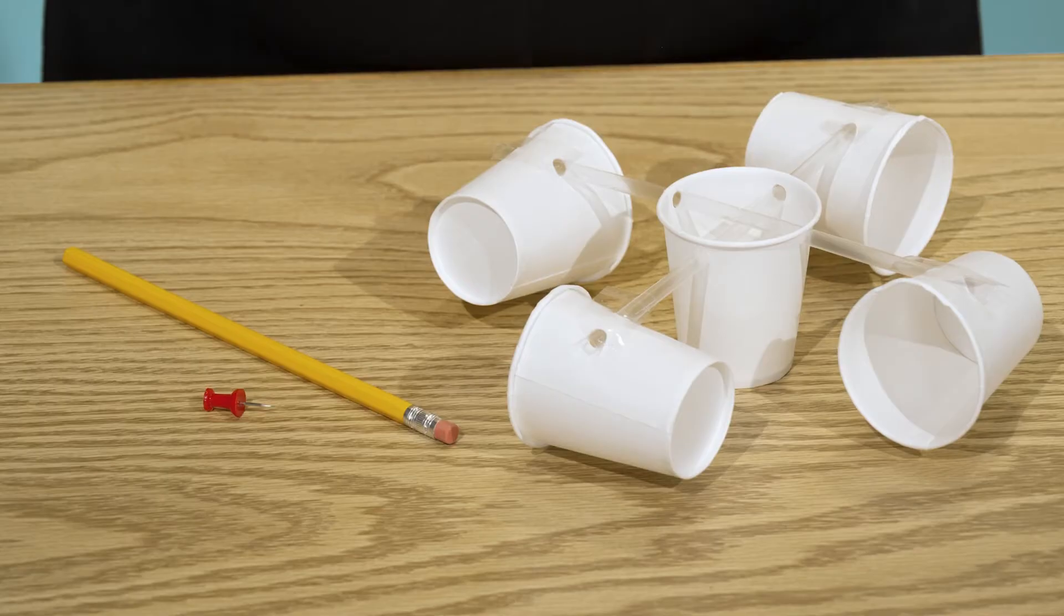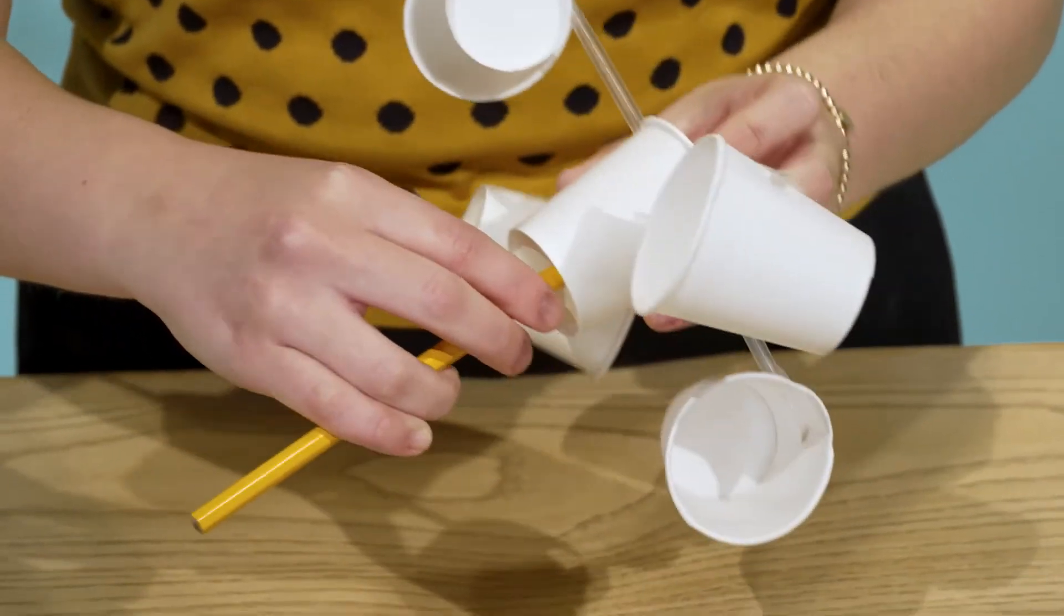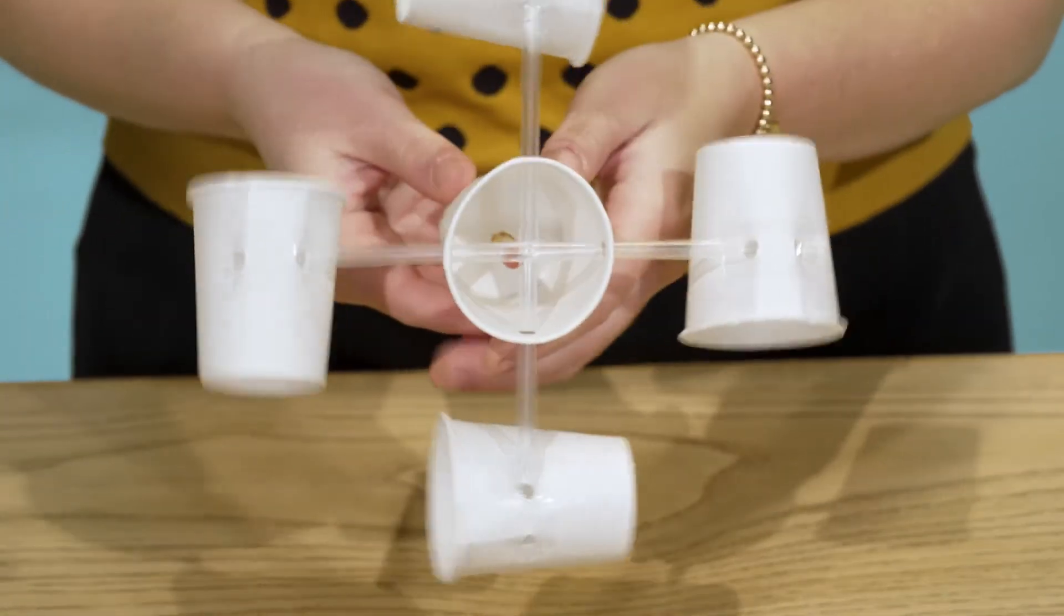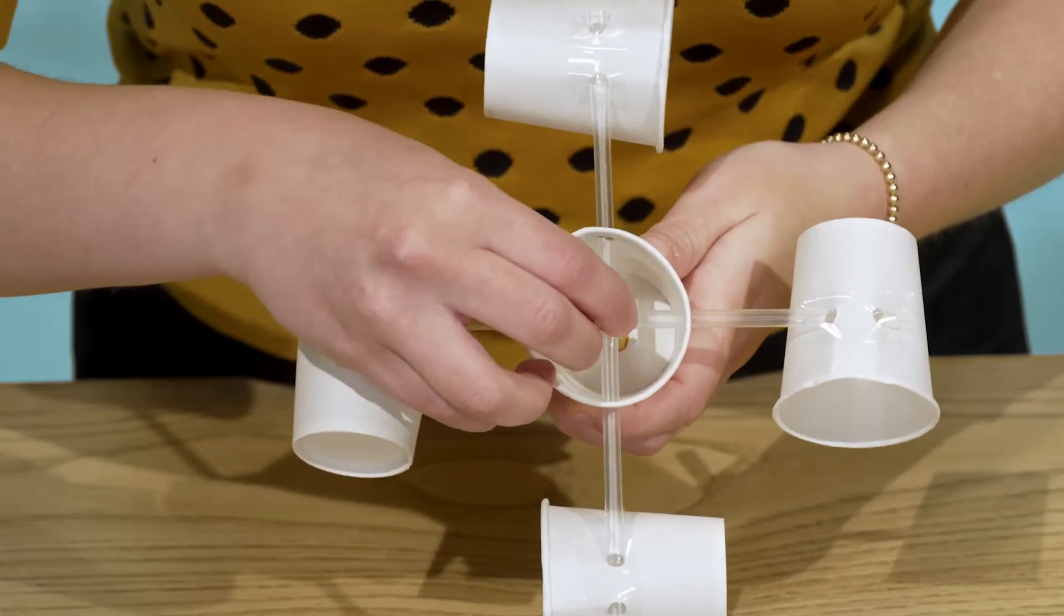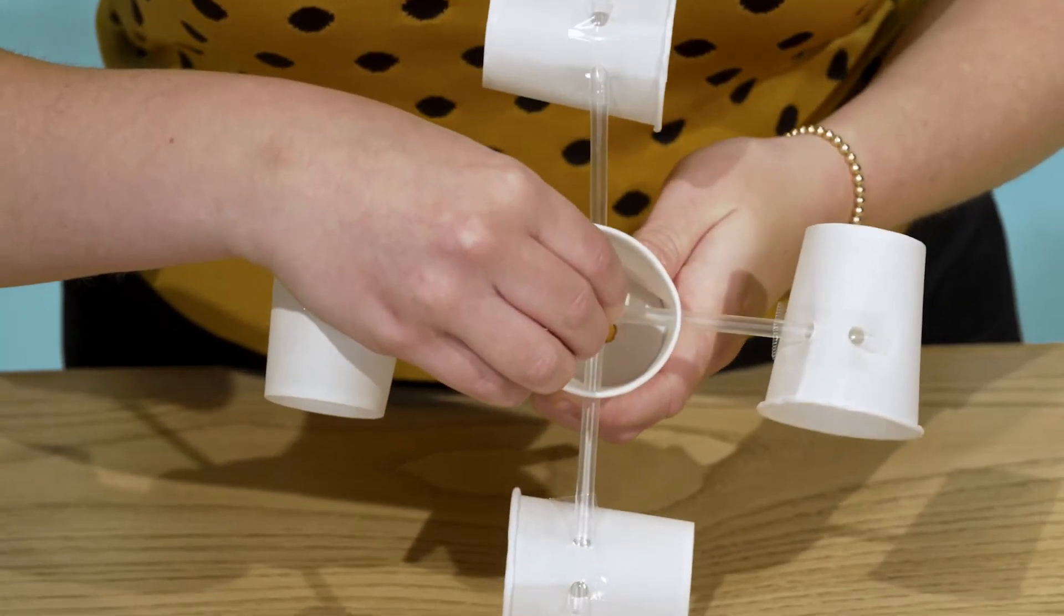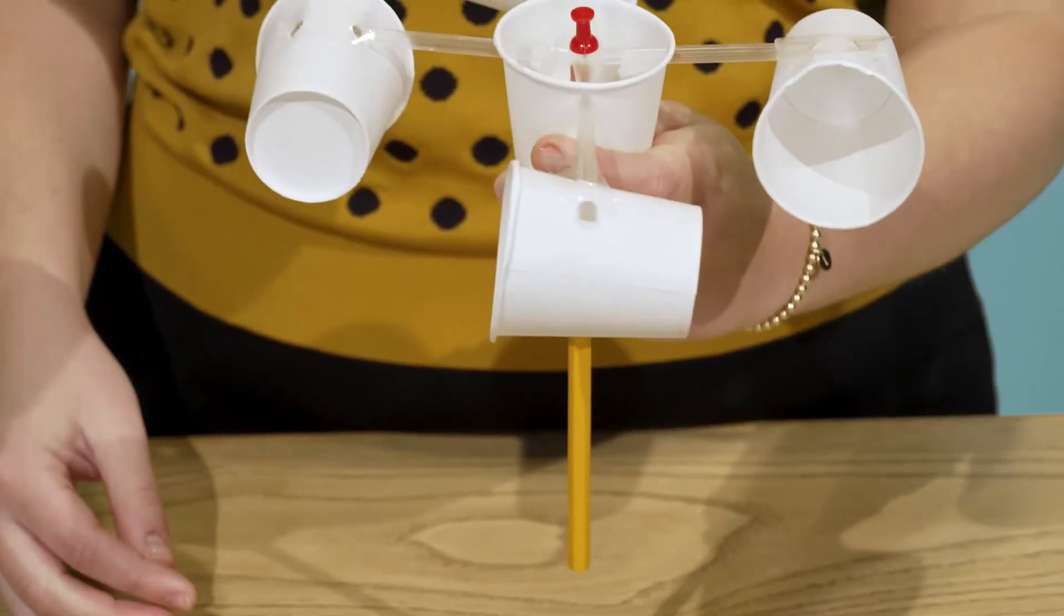We're almost done. Take your unsharpened pencil with a good eraser and push the eraser end through the hole you made in the bottom of your center cup. Press your pushpin through the two straws where they crisscross and secure it lightly in the pencil eraser. Don't push it in all the way or the cups won't be able to spin.